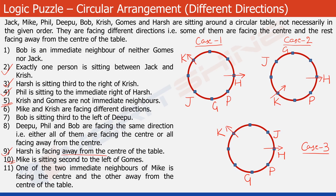Using statement 10, we can now place Mike in all three structures. In Case 1, Mike occupies the only valid position, and Gomes must be facing towards the centre. In Case 2, Mike goes to his position, and for Mike to be second to Gomes's left, Gomes must be facing away from the centre — so Jack is to Gomes's left and Mike is the second person to his left. In Case 3, Mike is placed and Gomes is facing towards the centre.